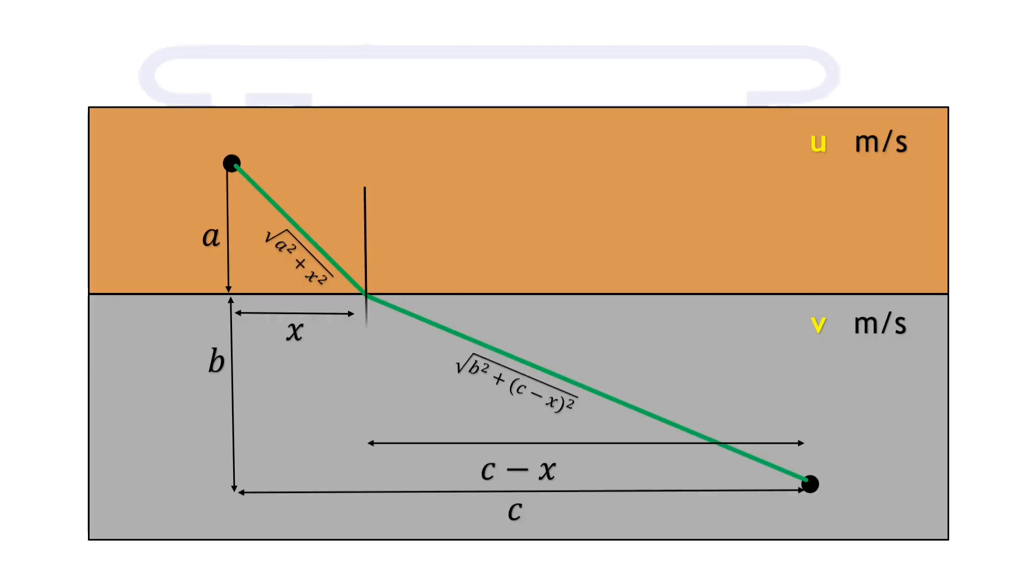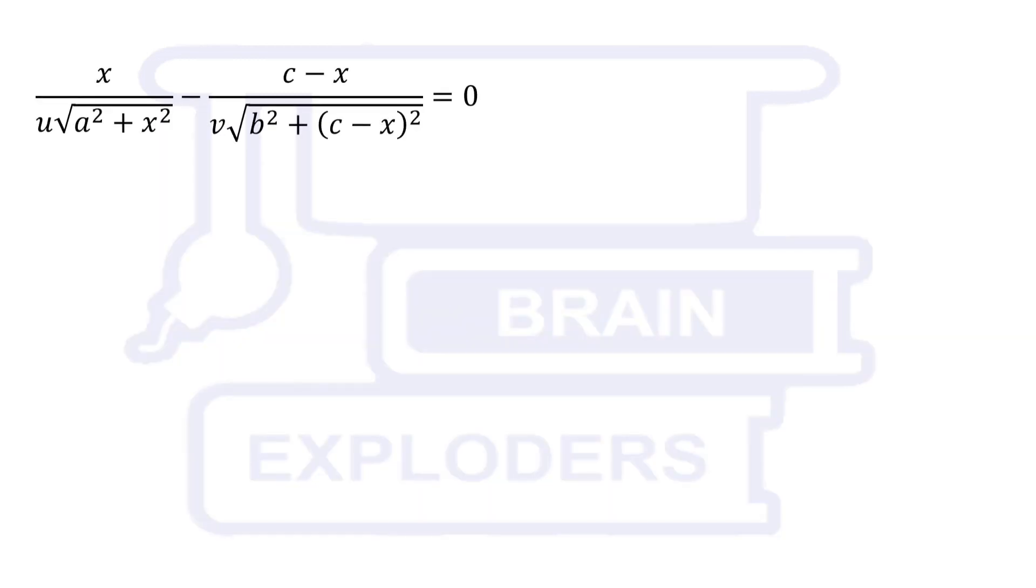If we draw a normal on the boundary between these two surfaces and consider these angles as i and r as shown in the figure then sin i becomes x over root a squared plus x squared and sin r becomes c minus x over root b squared plus c minus x squared. On substituting these values and rearranging the terms we get sin i over sin r equals to u by v. This is the phenomenon which is followed by light also and is commonly known as Snell's law in refraction.